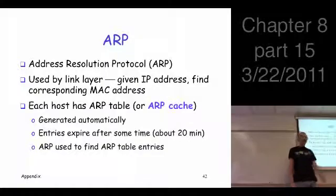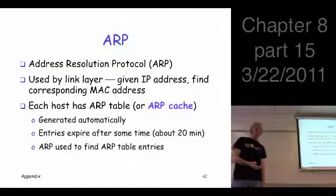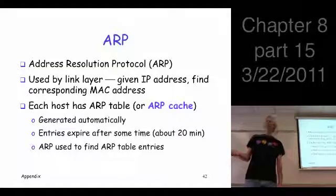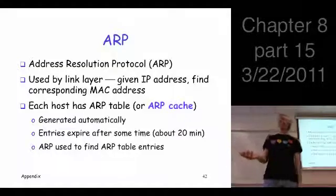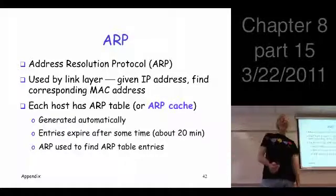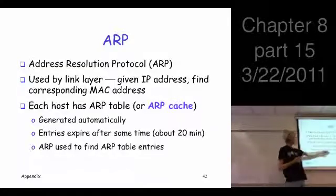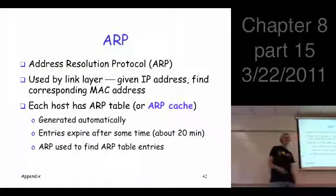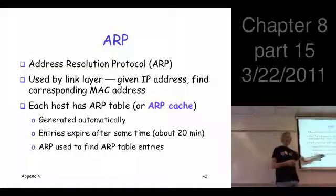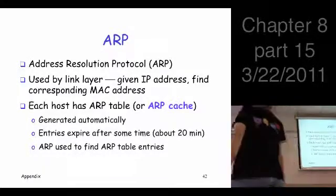The entries in the ARP table don't last forever — typically about 20 minutes, then they expire. Why not keep them forever? Because IP addresses can change, and even MAC addresses can occasionally change if the hardware changes. So you don't want stale entries sticking around; you need to refresh them once in a while. ARP is used to fill the entries in this ARP table.